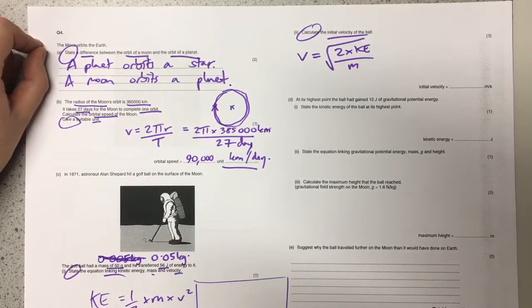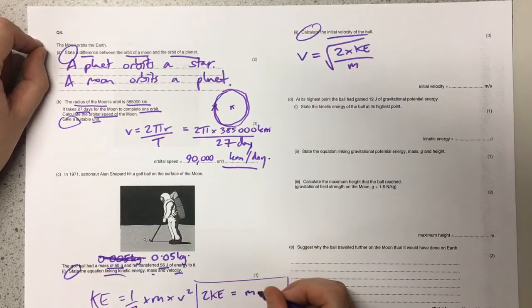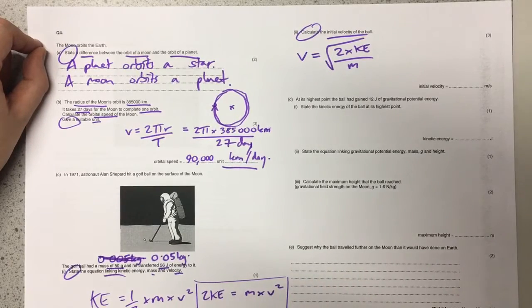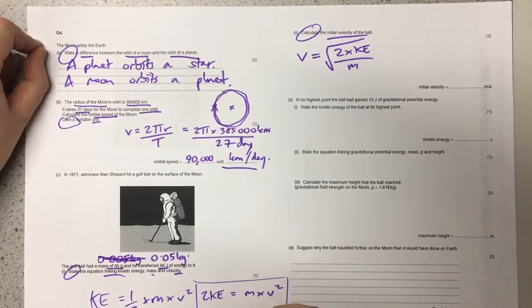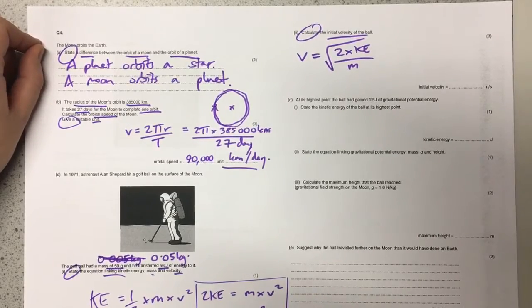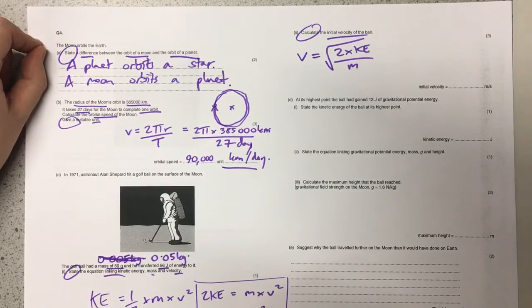The first thing that I would do in this equation is move the half over to this side. If I want to get rid of a half, I've got to multiply by two, so I get two kinetic energies equals the mass times the velocity squared. The next thing I'm going to do is move the mass over to this side. At the moment it's multiplied by the velocity, so I've got to divide it to get rid of it here and then move over to here. Then I'm going to get two times the kinetic energy divided by the mass equals the velocity squared. Then the final step is to get rid of this squared, and the opposite of that is the square root. So square root of two times the kinetic energy divided by the mass, I'm left with the velocity.